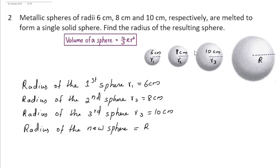Here the entire metal in these three spheres is used to make this new sphere. So the volume of the new sphere will be equal to the sum of the volumes of these three spheres.